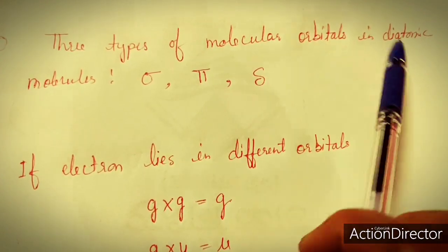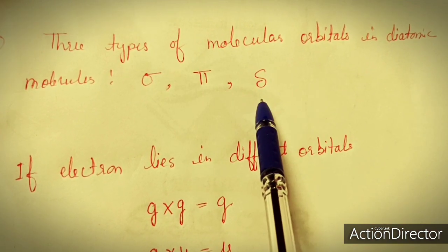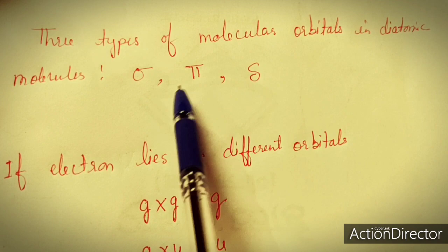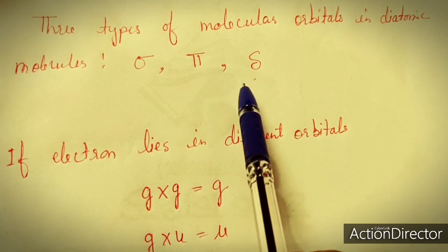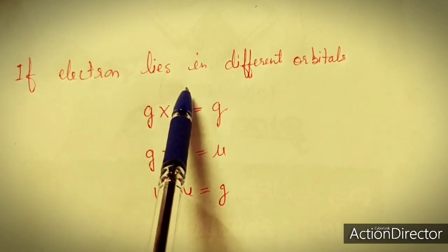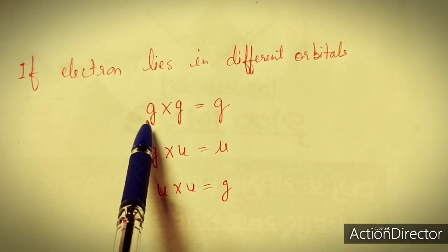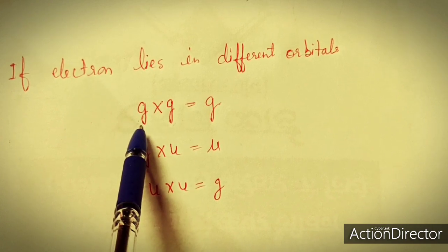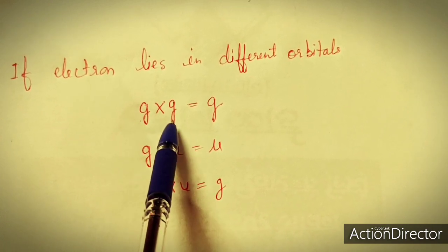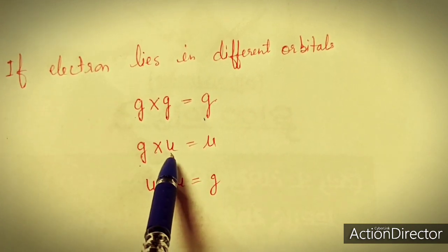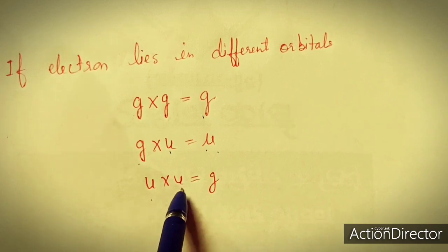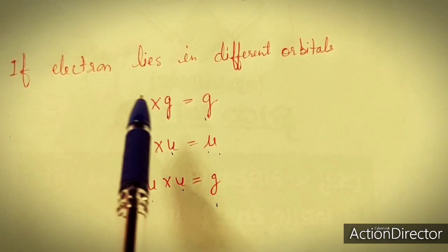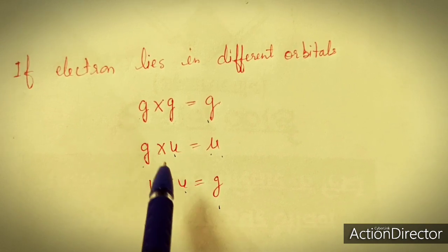There are three types of molecular orbitals in diatomic molecules: sigma, pi, and delta. When electrons lie in different orbitals, the multiplication rules are: G×G = G, G×U = U, and U×U = G. These points are useful in determining the ground state term of a diatomic molecule.